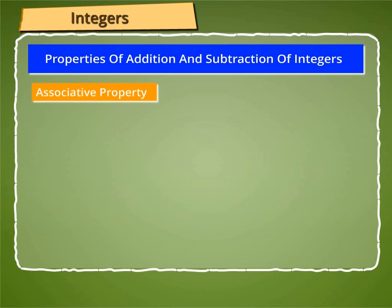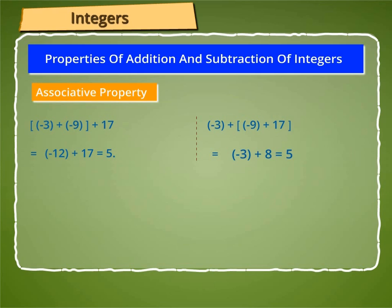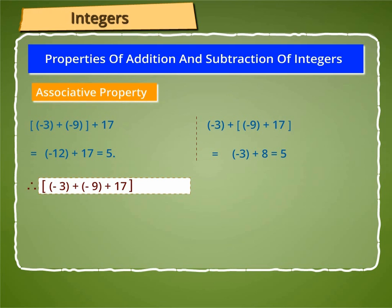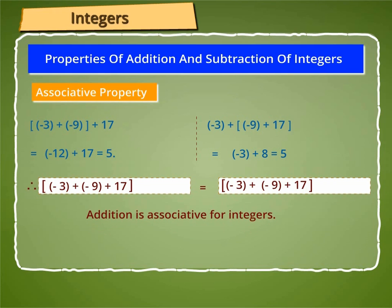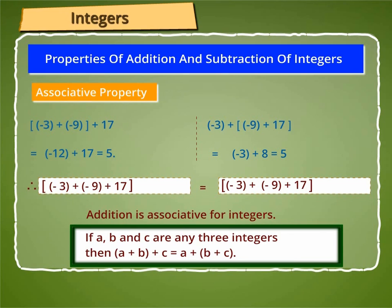The next property is the Associative Property. We know that (minus 3 plus minus 9) plus 17 is equal to minus 12 plus 17, which equals 5. Also, minus 3 plus (minus 9 plus 17) is equal to minus 3 plus 8, which equals 5. Therefore, (minus 3 plus minus 9) plus 17 is equal to minus 3 plus (minus 9 plus 17). Thus, addition is associative for integers. Hence, if A, B, and C are any three integers, then (A plus B) plus C is equal to A plus (B plus C).